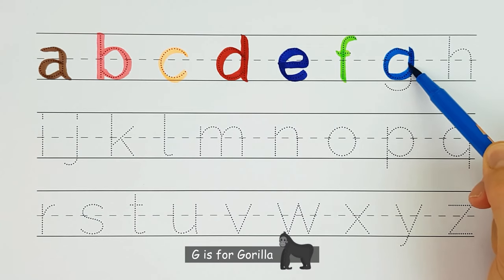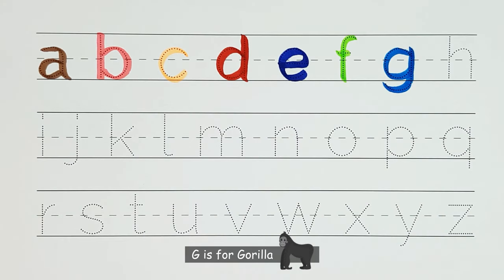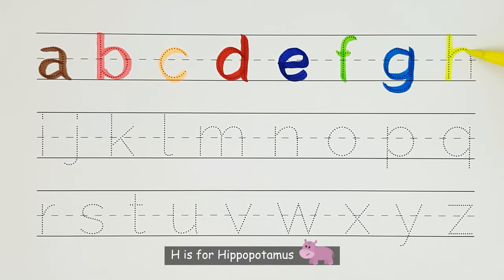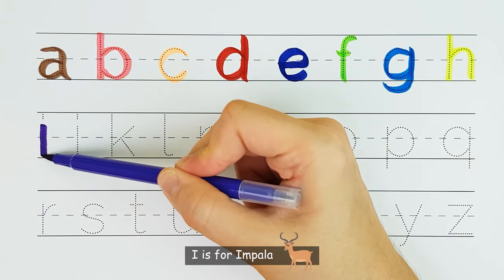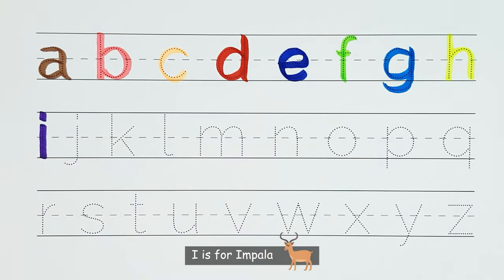G. G is for gorilla. G. H. H is for hippopotamus. H. I. I is for impala. I.